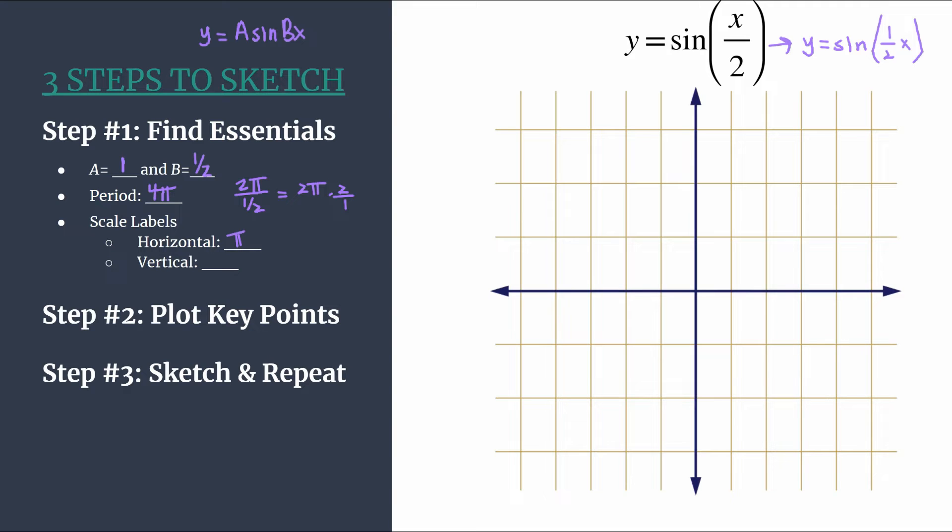The vertical labels are much easier. We can usually just use a or even sometimes just 1. Let's go ahead and label our axes. So we count by pi: 1 pi, 2 pi, 3 pi, 4 pi. Stop and do your double check here. Your fourth horizontal tick mark should match your period because that's the length of a cycle.